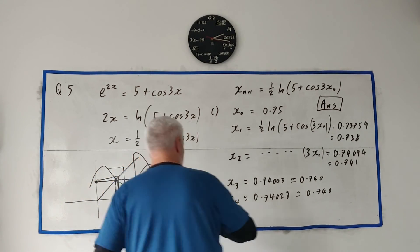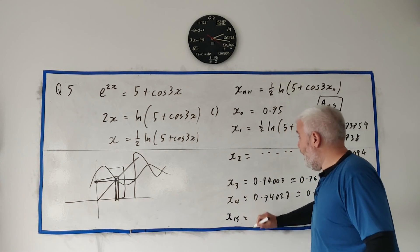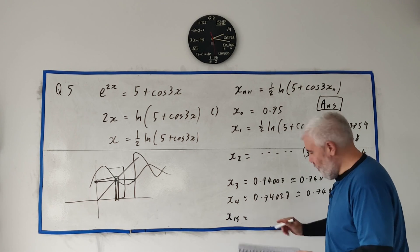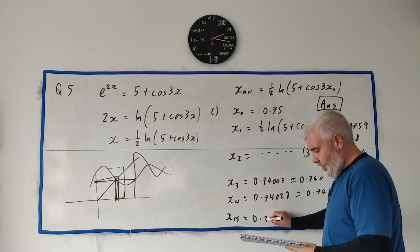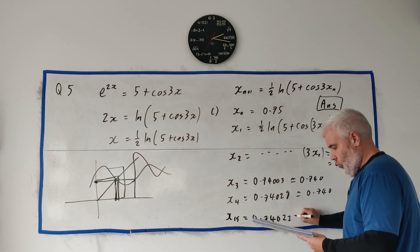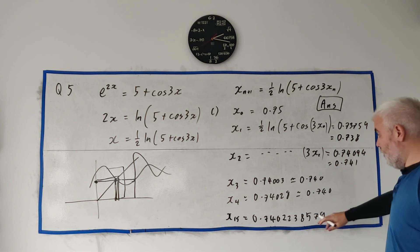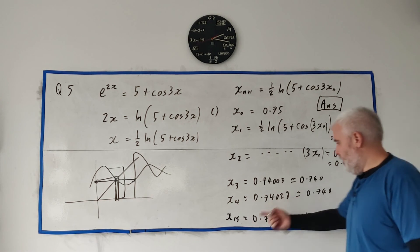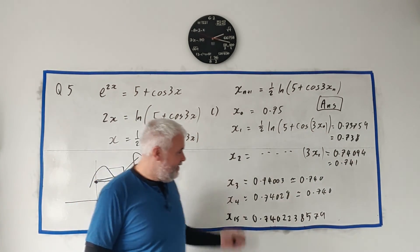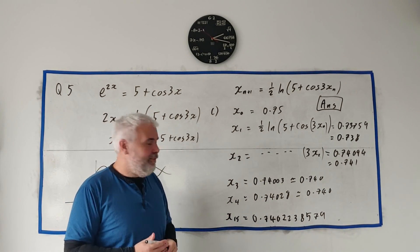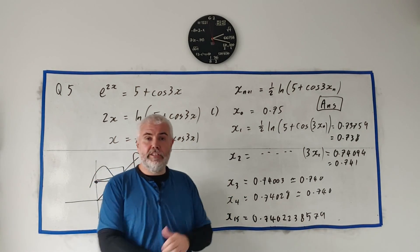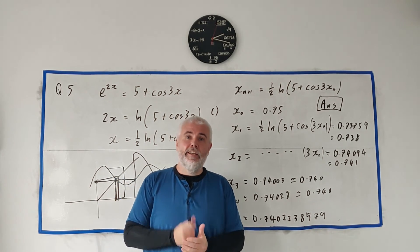I went all the way to x15 and no matter what number you start with between 0.7 and 0.8, tapping equals about 15 times gives you the answer to 10 decimal places: 0.7402238579. You can keep going for more decimal places indefinitely. That's question 5 finished. If you have any follow-up questions please let me know — thanks for watching and have a great day.